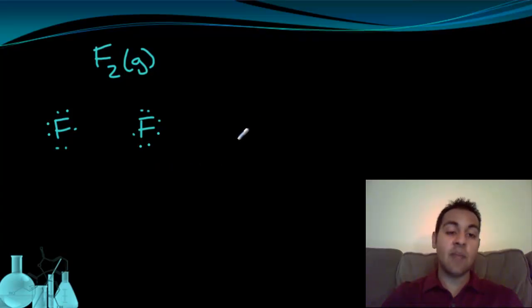And they can actually accommodate each other by sharing. The fluorine on the left shares this valence electron, while the fluorine on the right simultaneously shares this one. And when that happens, when these two are shared, they count for both atoms.